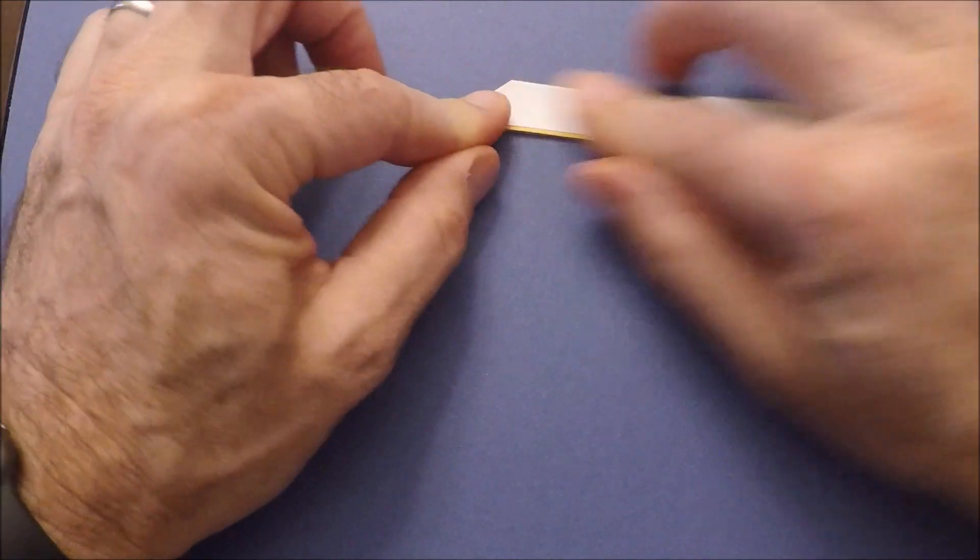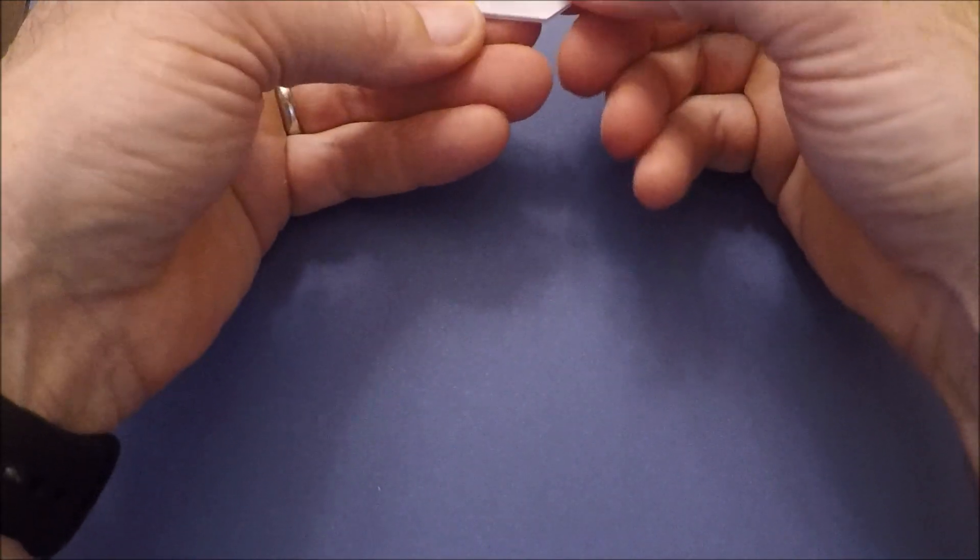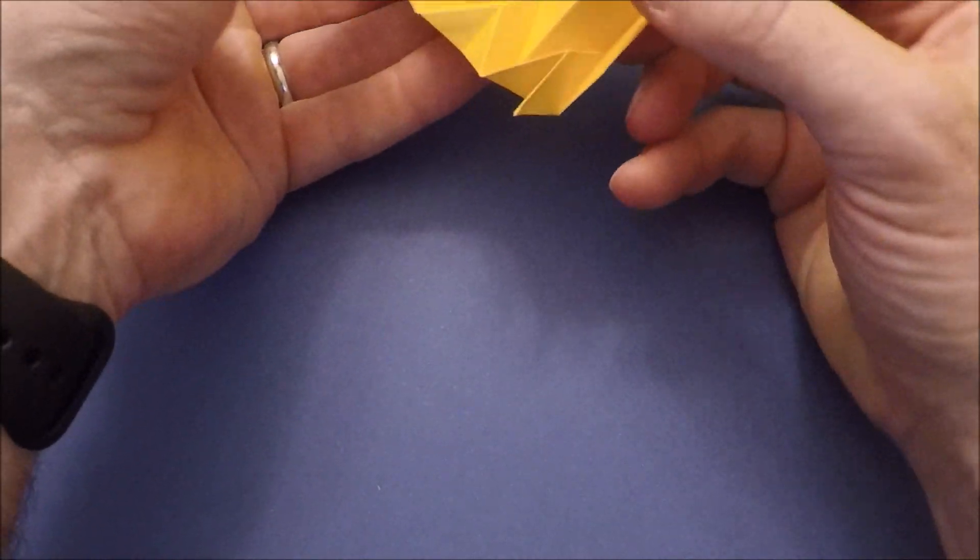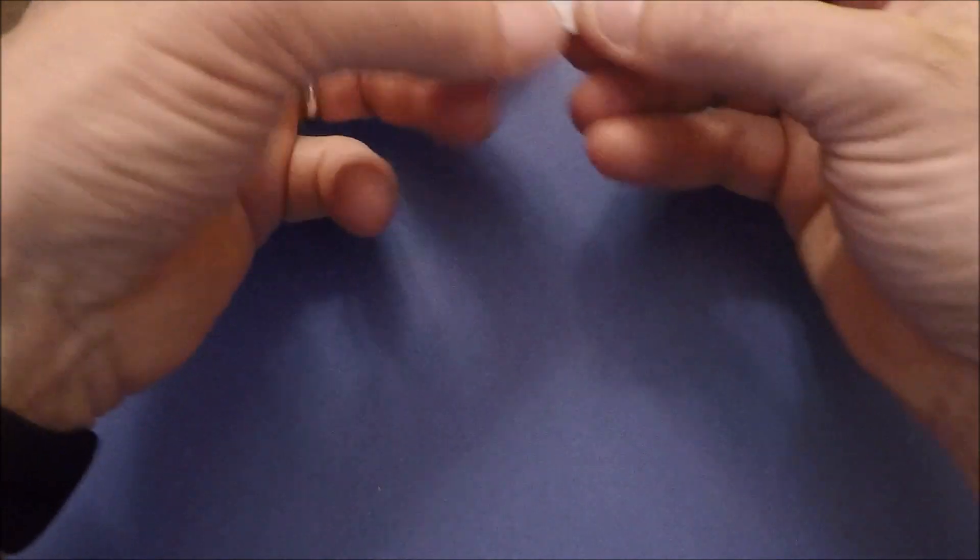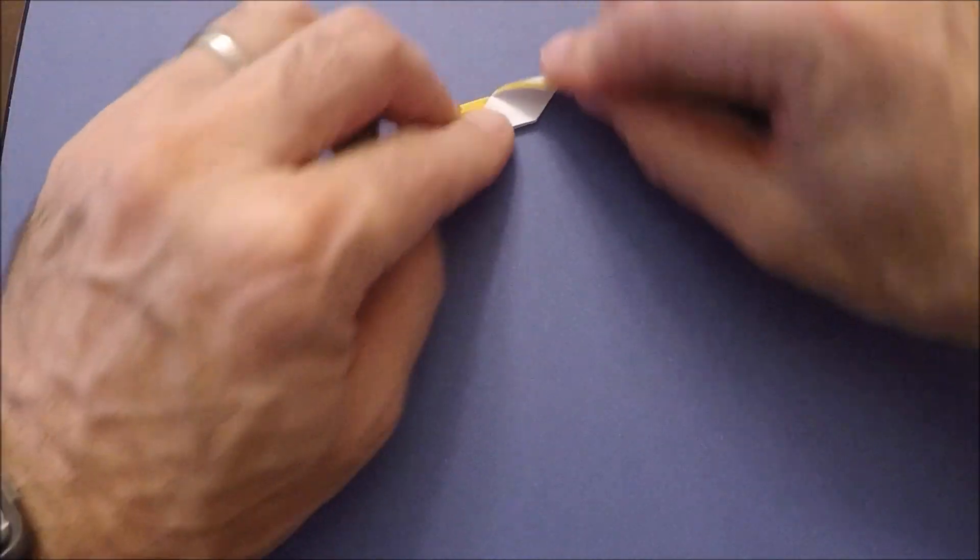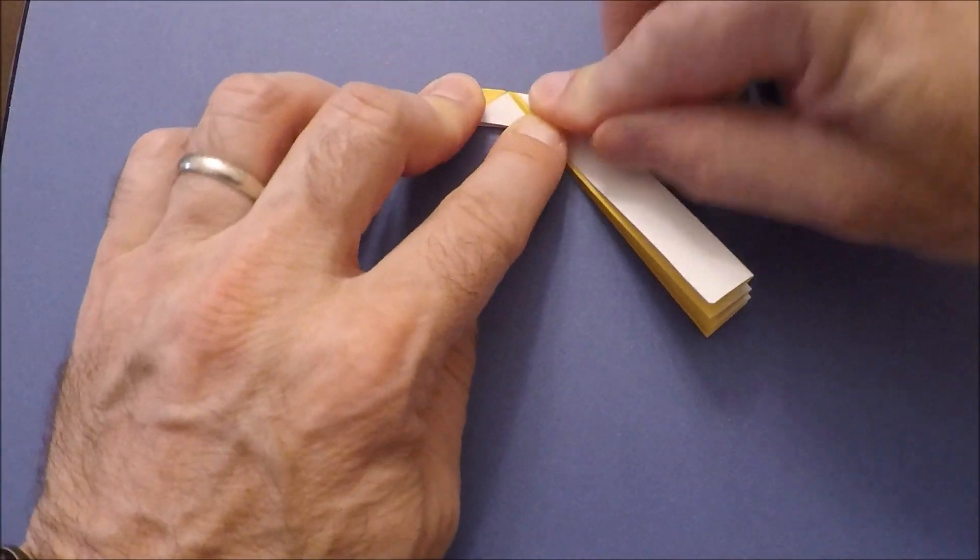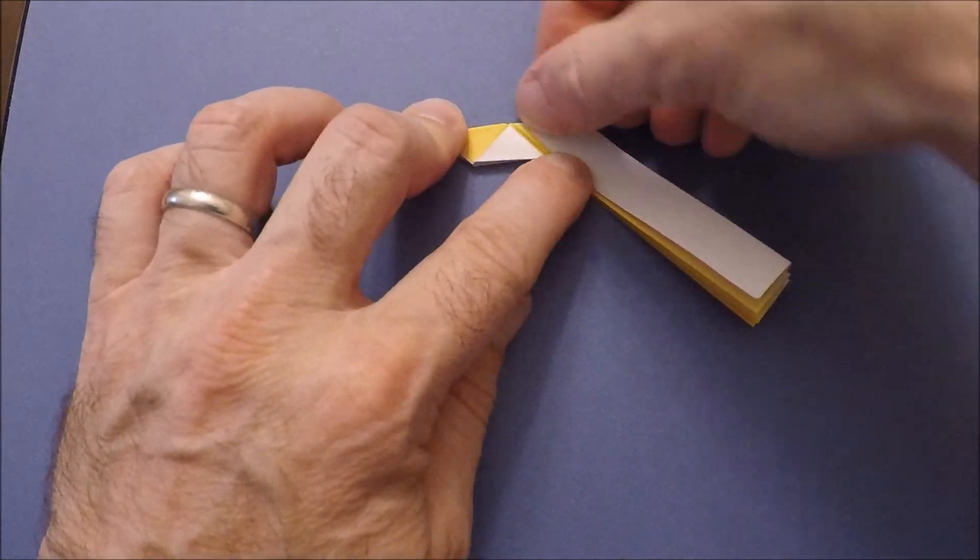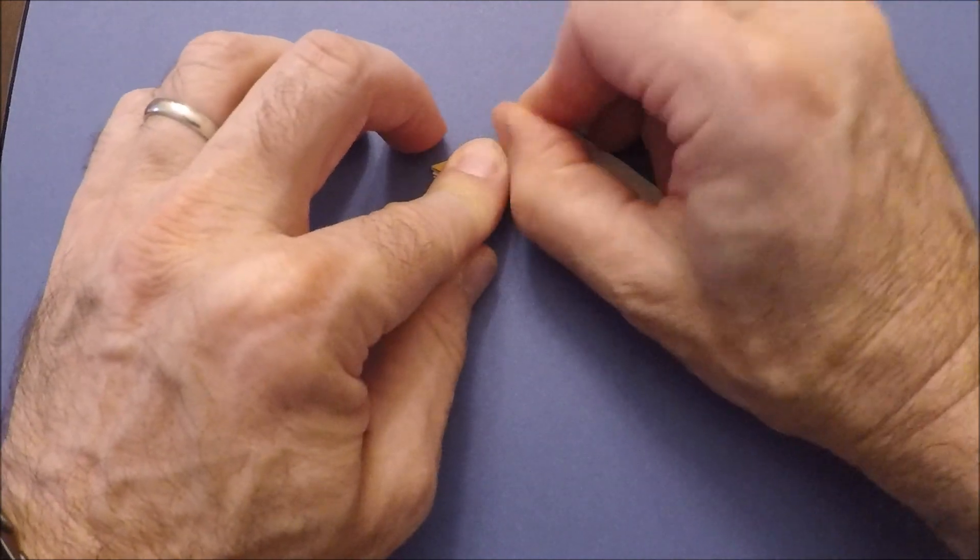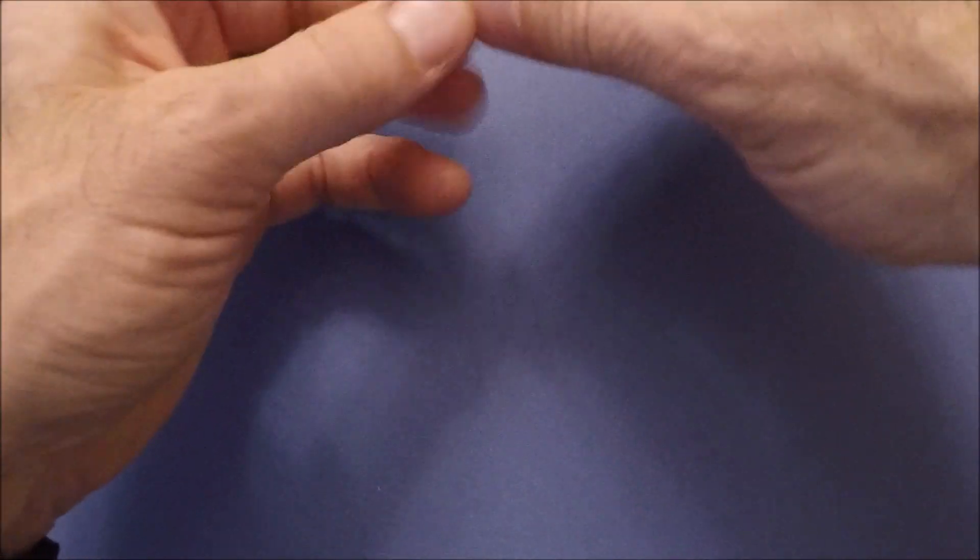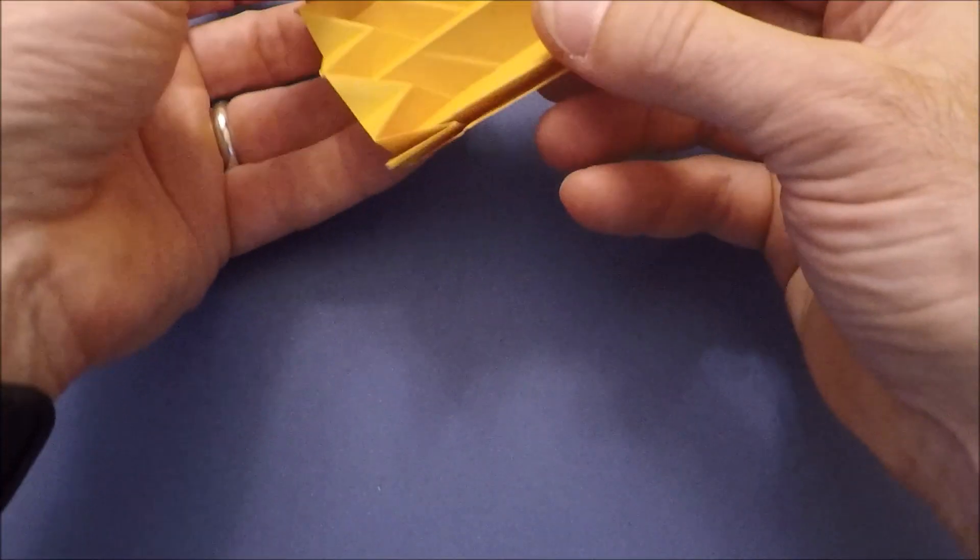Now just straighten that up a little bit. The pattern will just continue—you can see we're starting the little mountains and valleys. We'll fold this back down. It almost looks like a W. Get those as crisp as we can.